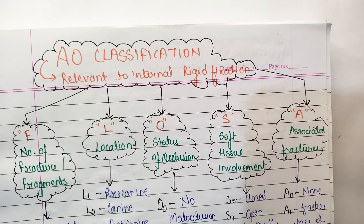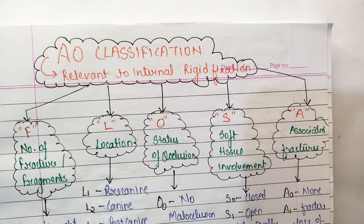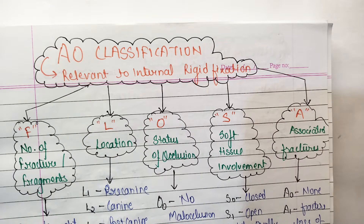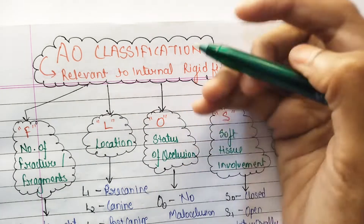Hello everyone, welcome to the SAM — that is Study, Art, Motivation and Education. In this video we are going to discuss the classification of mandibular fractures. We have given a lot of classifications in the first part — there are almost 11 classifications in mandibular fractures — and we have already discussed the general classification. Now we are going to discuss a very important one: the AO classification.